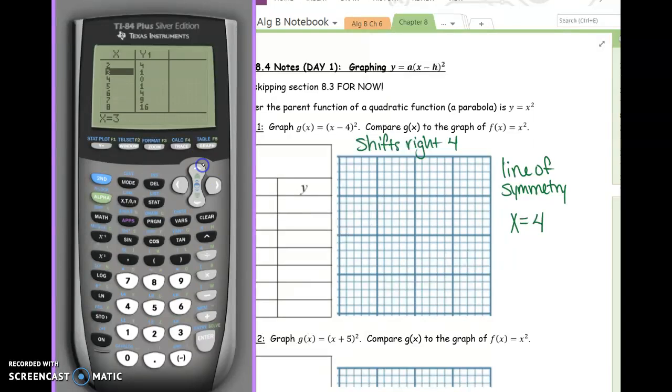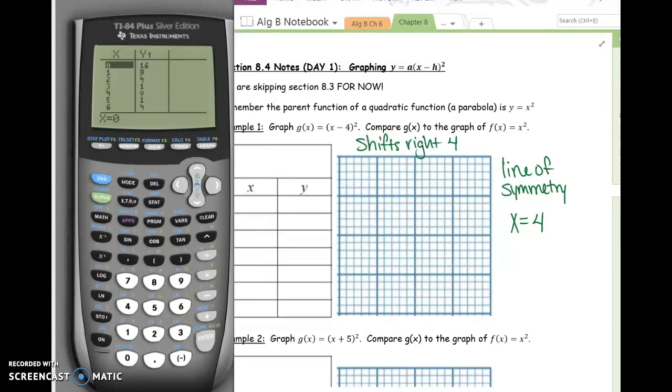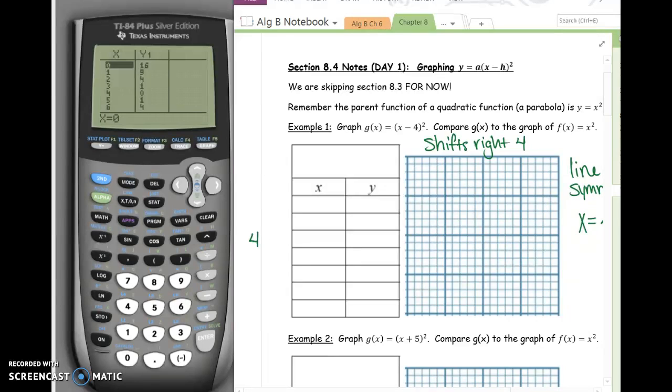Because our symmetry line is at 4, we need to move this table until we can see an x value of 4. So use your up or down arrows to find 4. Okay, so I found 4 on my calculator, and then I went a couple of points past 4.